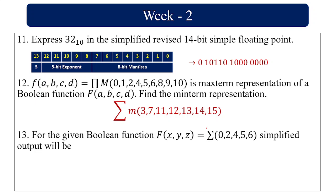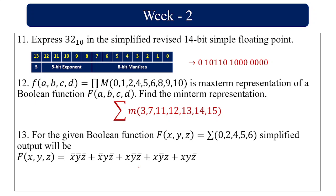Likewise, for the Boolean function F(x, y, z) equal to min terms 0, 2, 4, 5, 6, the simplified output can be found. We can use a Karnaugh map to solve this, which will be covered in following lectures. Using the kmap, the simplified result is z inverse plus x, y inverse.